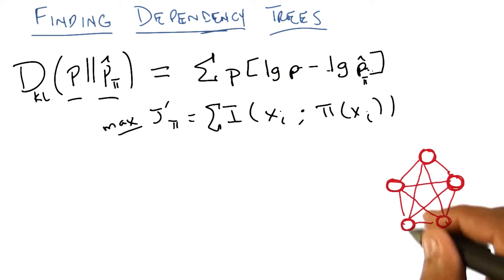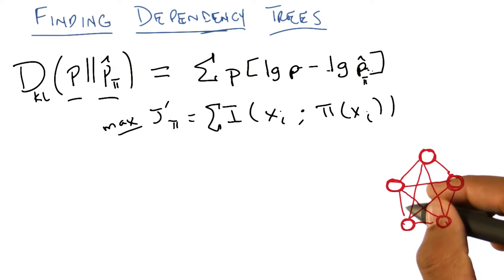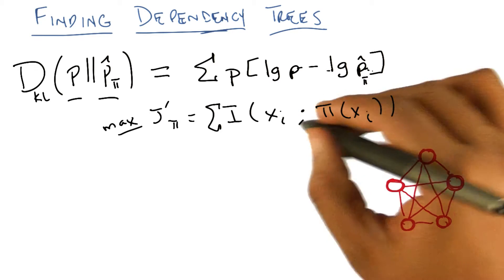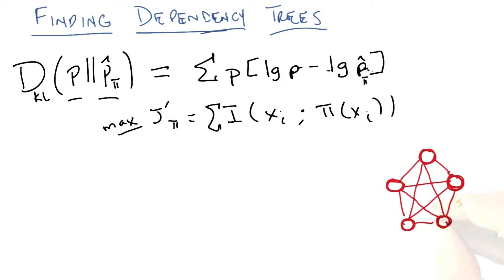Here I've drawn a bunch of nodes as part of a graph and all the edges between them. Each one of these nodes represents a feature, an x sub i. What goes on the edges is the mutual information between them. So I now have a fully connected graph which has the mutual information between each pair of nodes, all n squared edges.